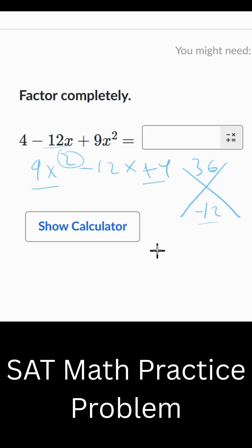Next you have to find the factors which add up to negative 12 and multiply to 36, which in this case would be negative 6 and negative 6.